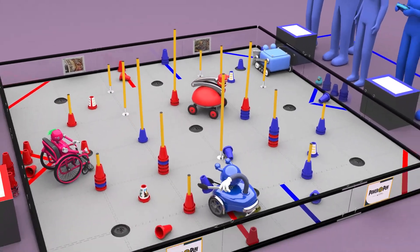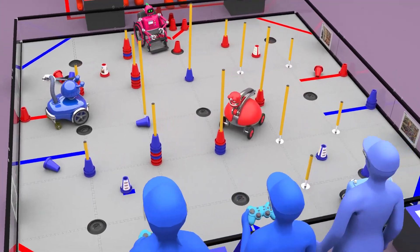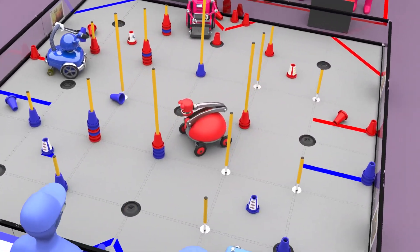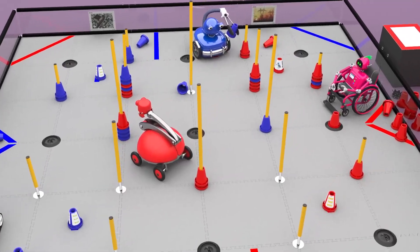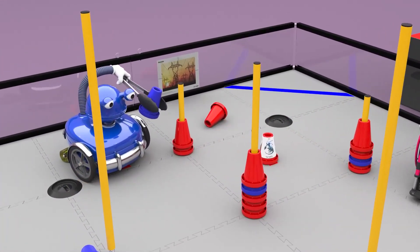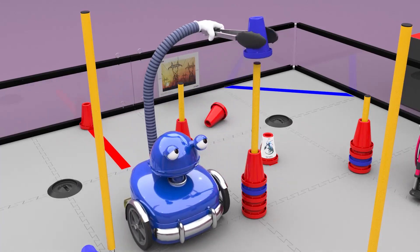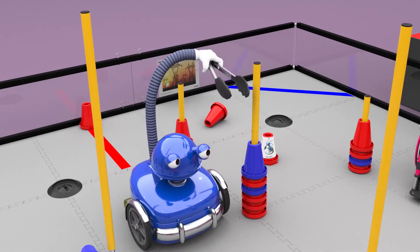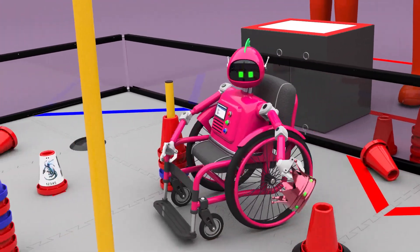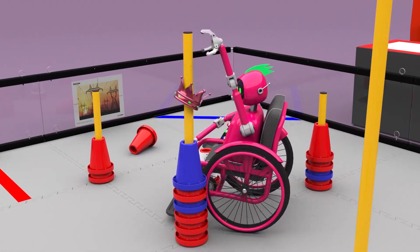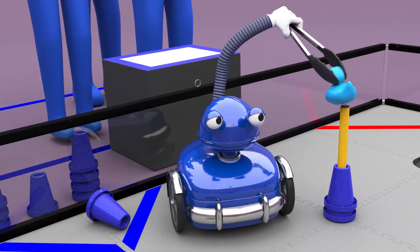The last 30 seconds of the driver-controlled period is the end game. Robots may continue scoring cones, but there are also ways to earn bonus points. Alliances earn points for owning a junction. This can be accomplished in two ways. An alliance owns the junction if their colored cone is scored on top. This earns an additional three points. The junction can also be owned by capping it with a beacon. This earns 10 additional points and prevents the opposing alliance from recapturing that junction.